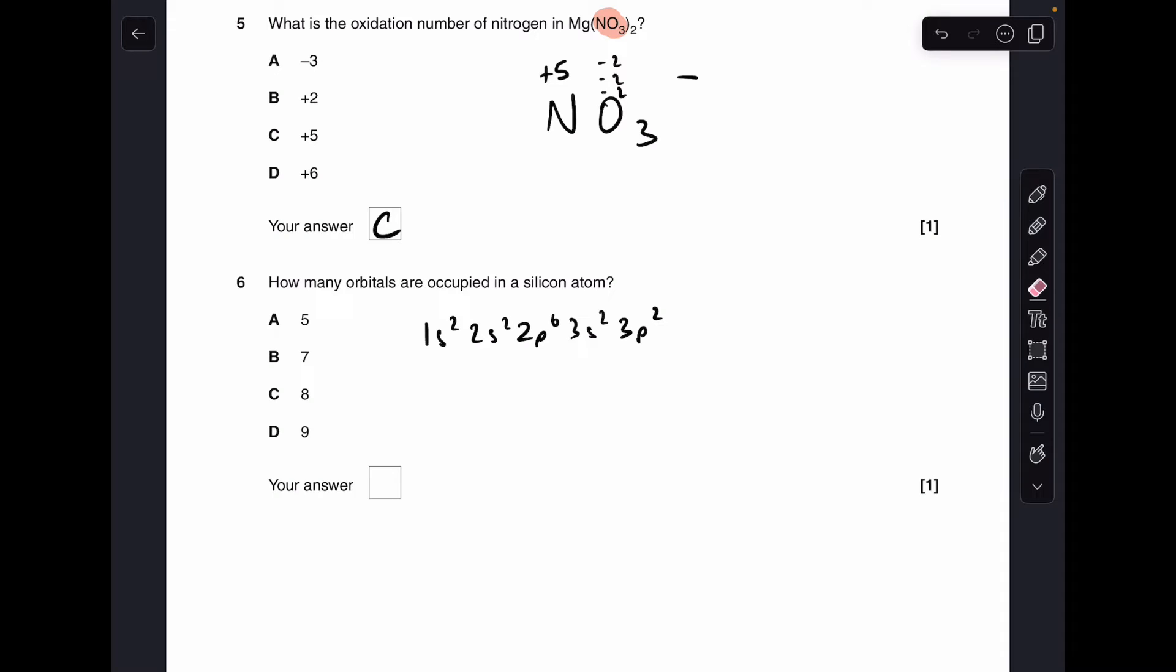Moving on to number 6. How many orbitals are occupied in a silicon atom? You'll notice I've already written out the electron configuration for silicon. So if we think about how many orbitals there are in each subshell. In any S subshell, there's one orbital. Moving on to the P subshell. There's three occupied orbitals in that 2P6 part. And if we think about the 3P2, let's visualize the electrons in boxes, they're arranged like that. So there's actually two orbitals occupied there. So that's a total of 8. So the answer is C.